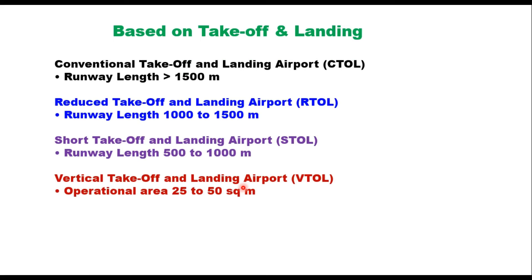There can be different types of takeoff and landing depending upon the type of aircraft. They are categorized as Conventional Takeoff and Landing airports, or CTOL. Conventional airplanes accelerate on the runway to get sufficient lift for takeoff; during landing, they use the runway to reduce speed from landing speed to turning speed. When runway length available is 1500 meters or more, it is called a conventional takeoff and landing airport. When it is between 1000 meters to 1500 meters, it is called a reduced takeoff and landing airport.